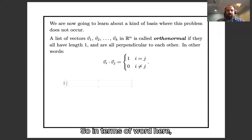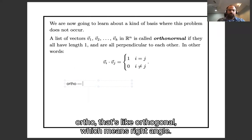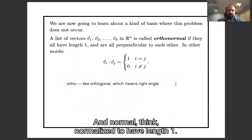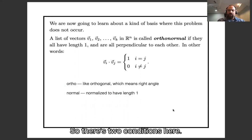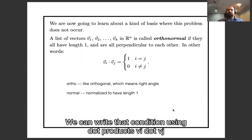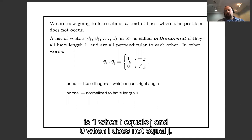So in terms of the word here, ortho means orthogonal, which means right angle, and normal means normalized to have length 1. So there's two conditions here: the vectors are orthogonal, they have dot product 0 with each other, and they are normalized to have length 1. And we can write that condition using dot products: vi · vj is 1 when i equals j, and 0 when i does not equal j.